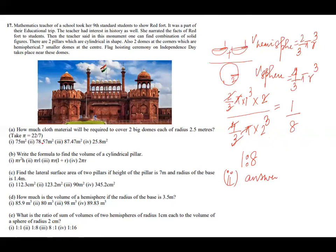So we got for part a, second option is the answer. For b, first is the answer. For c we get 123.2. And for fourth we got 89.83. And last one, option 2 is the answer.